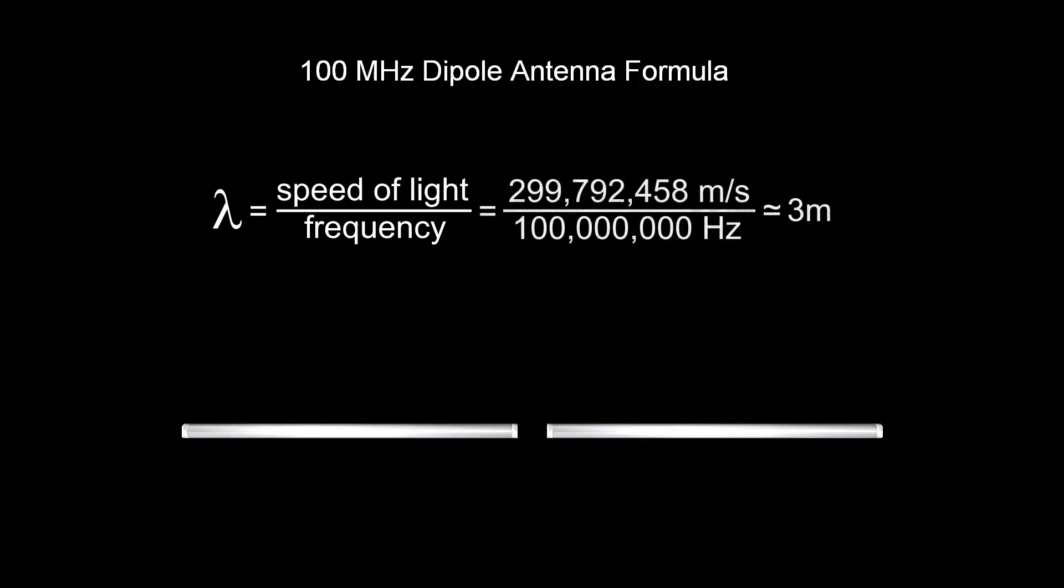Let's say we want to create an FM radio antenna optimized for 100 megahertz. We calculate the wavelength by dividing the speed of light, which is approximately 300 million meters per second, by the frequency. This results in a wavelength of about 3 meters. In this case, a single dipole element would have a length of about 3 meters divided by 4, and the full dipole would have a total length of about 1.5 meters.